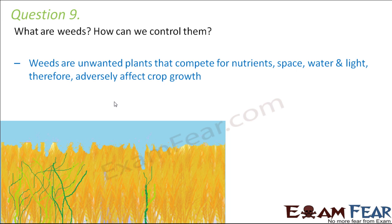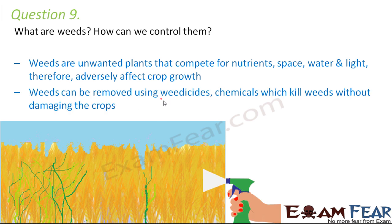Question number nine: what are weeds and how can we control them? Weeds are unwanted plants that compete for nutrients, space, water, and light, and therefore adversely affect crop growth. In a wheat field, for example, weeds compete with wheat crops for the same resources, growing at the cost of nutrients meant for the crop. We control them by applying weedicides — chemicals that kill weeds without damaging the crops.